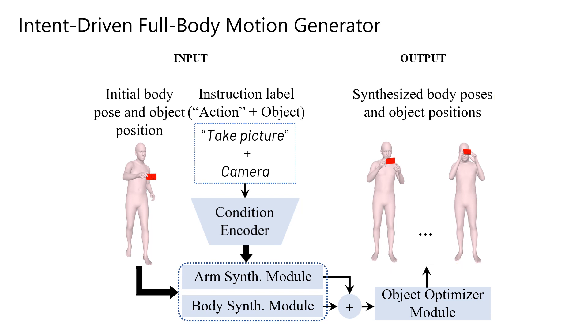In our generator network, we first encode the instruction labels using our condition encoder. Owing to the varying degree of involvement of the arms and the body joints for object interaction, we design an arm synthesis module to leverage the intent-based interactions between the objects and the arms and autoregressively synthesize arm movements.